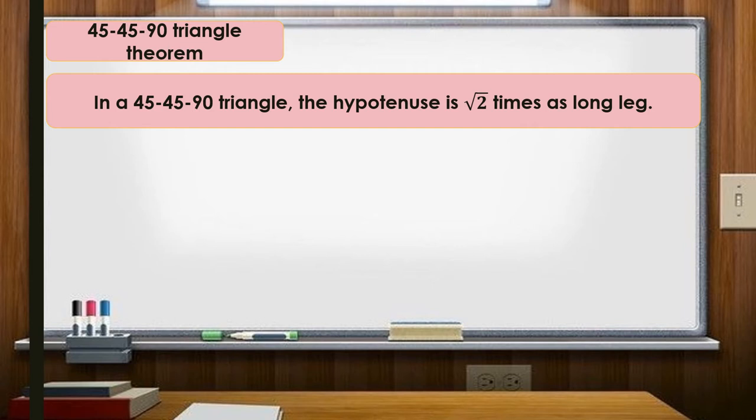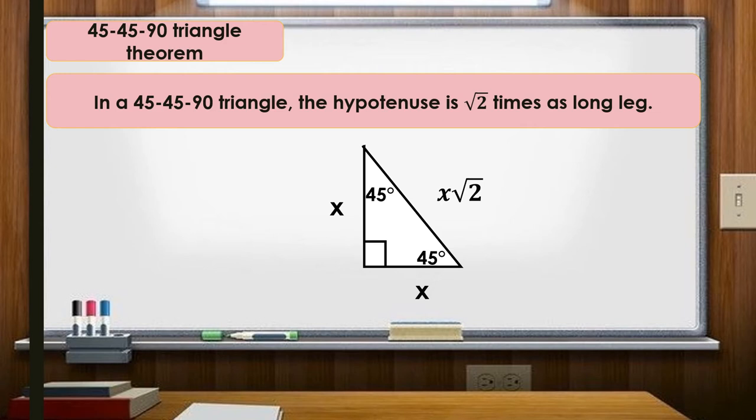The 45-45-90 triangle theorem: in a 45-45-90 triangle, the hypotenuse is always √2 times as long as each leg. The diagram shows two equal legs labeled x, a hypotenuse labeled x√2, and angles of 45°, 45°, and 90°.